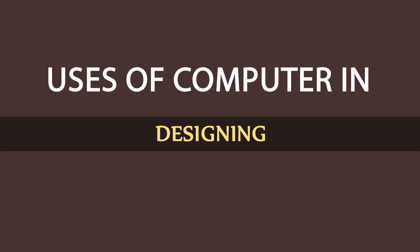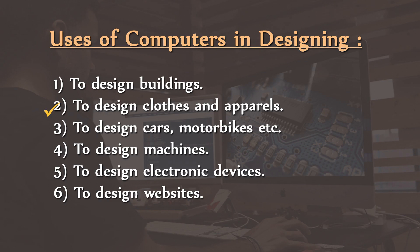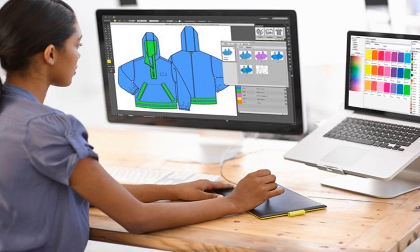Now the uses of computers in the field of designing. Number one, to design buildings. Computers are used by architects and civil engineers to design buildings and other constructions. Number two, to design clothes and apparels. Computers are used to design clothes and apparels of various types.